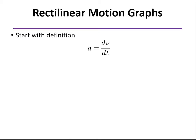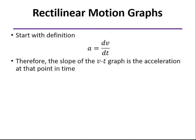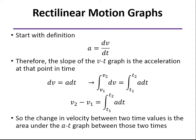If we start out with our definition of acceleration, the rate of change of velocity, that's just a derivative, so on the graph, that's the slope. The slope of our velocity graph is the acceleration at any particular point in time. Rearranging that equation and integrating both sides, we find that the change in velocity is the integral of the acceleration. In other words, it's the area under the acceleration graph between any two time steps.